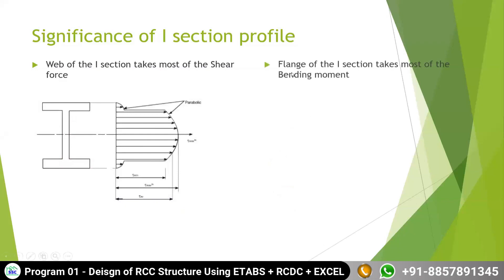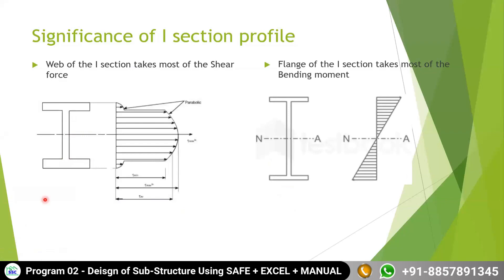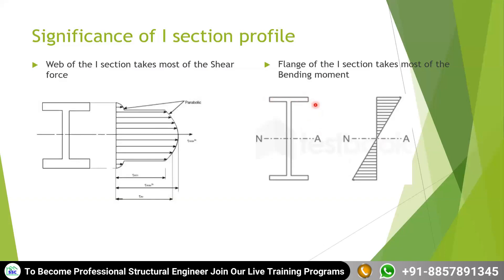The flange section takes most of the bending moment. You can see in this figure — the top flange, the web, and the bottom flange. At the center there is zero bending stress, and at the top and bottom of the flange you have the maximum bending stress. So if you want a section to take maximum bending stress, you need to make the flange stronger. In summary: web takes shear force and flange takes bending moment — this is the basic concept of the I-section.